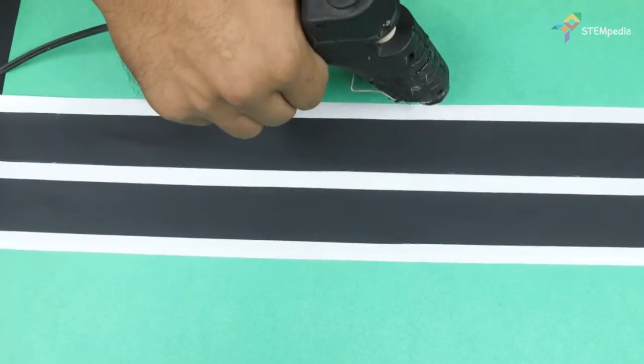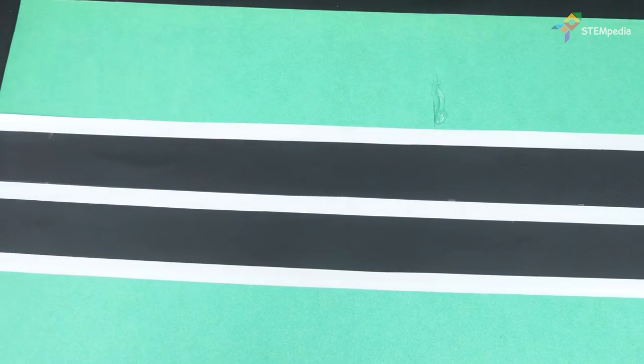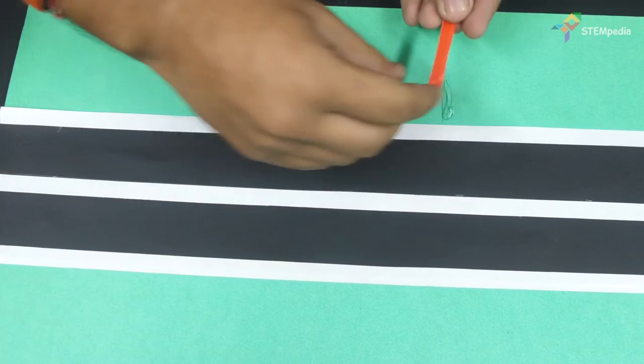At the center of the base, paste the support for the toll booth using hot glue. Now, paste the walls to the base and to the support using hot glue.